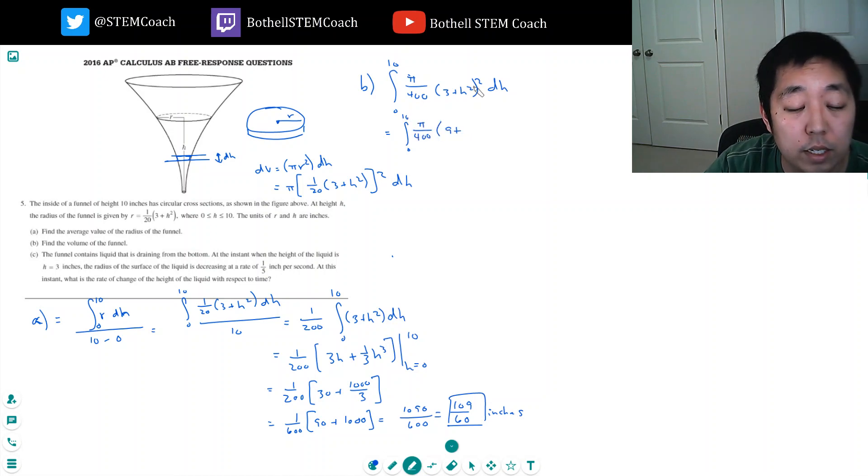I'll expand this out. 9 plus 6h squared plus h to the fourth. Sort of a lot to do without a calculator. I mean, not a graphing calculator, just numerically.